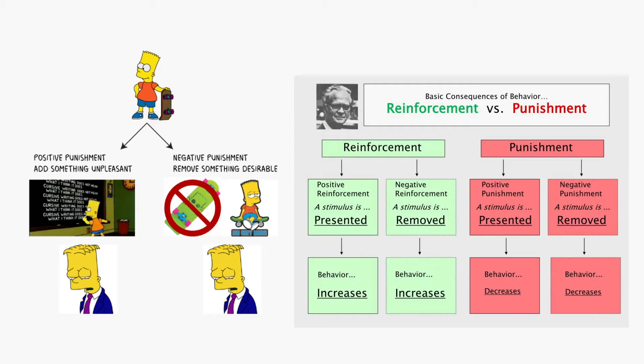In this graphic, we see positive punishment and negative punishment — positive being something unpleasant for the child, and negative being removing something desirable, like a Simpson character having their skateboard taken away. In this real-life scenario, I will be asking my cousin to put away the dishes. Failure to do so will result in a negative punishment — she will have her phone taken away and lose the right to go to a party.